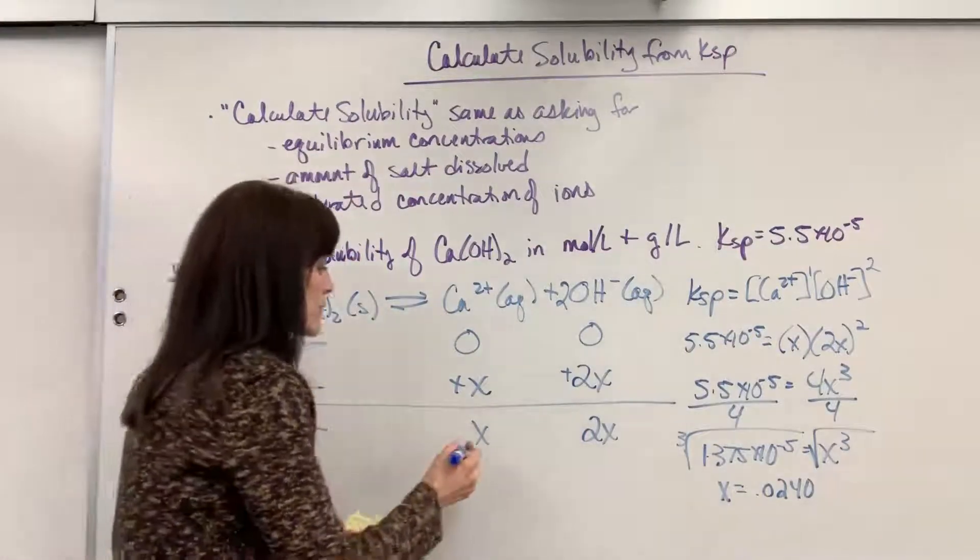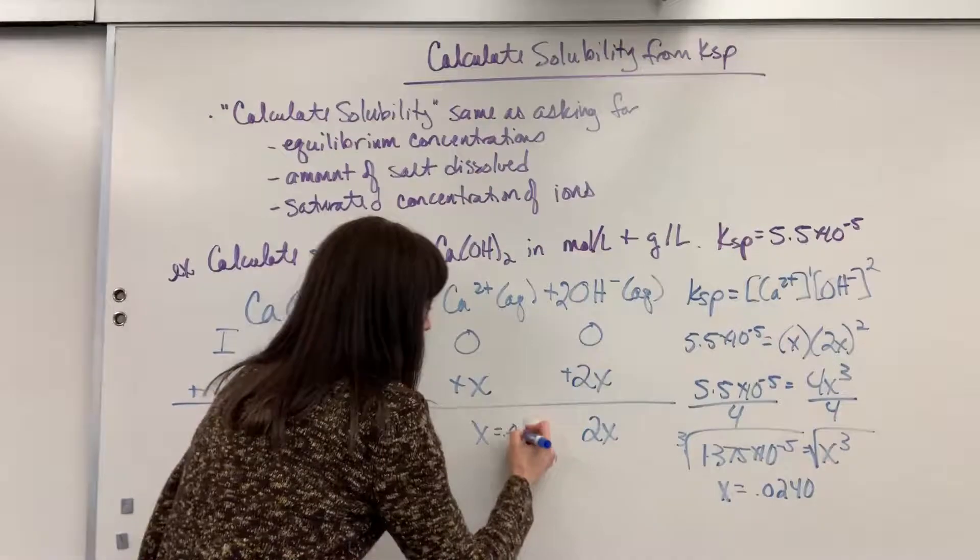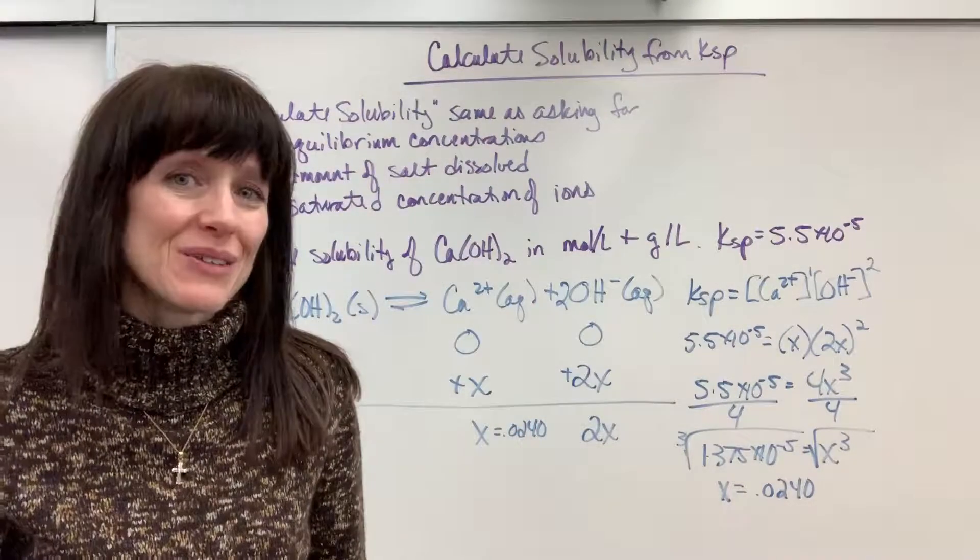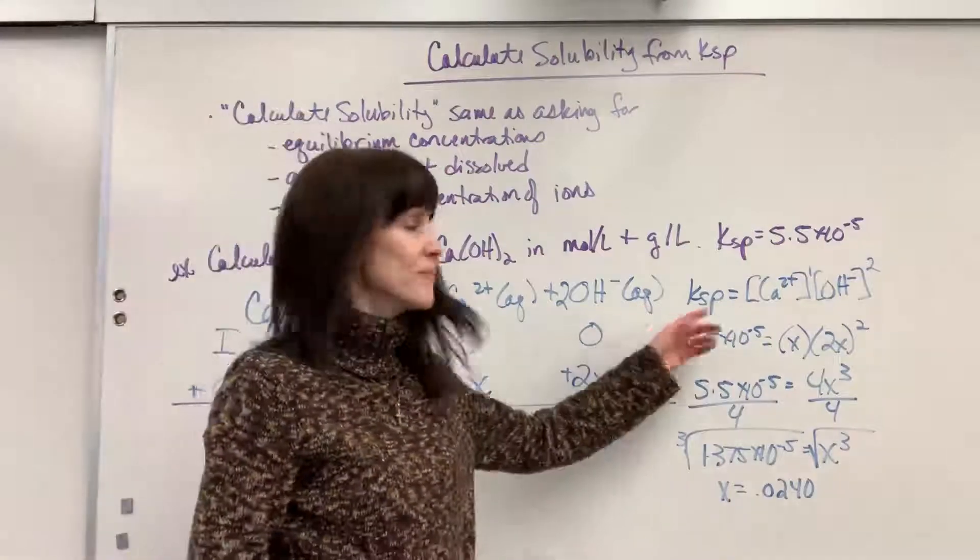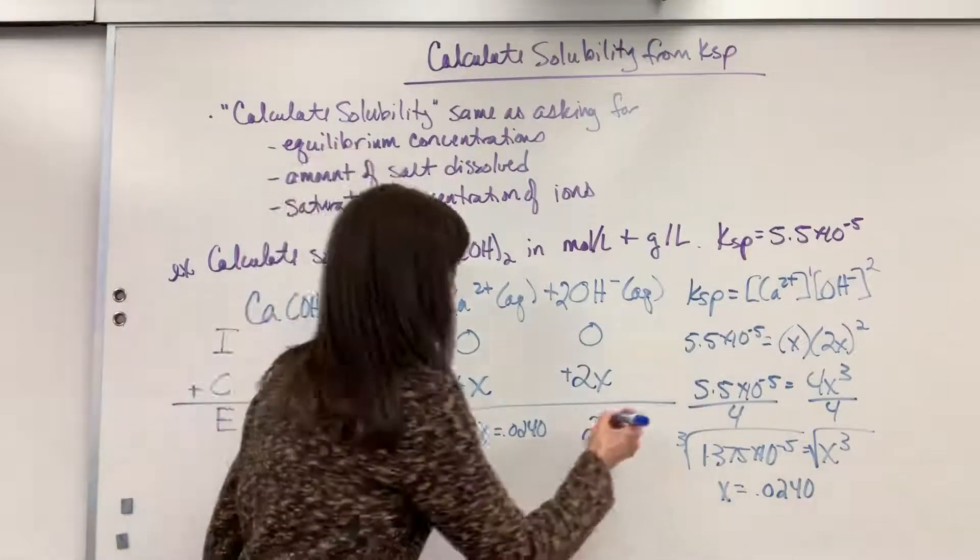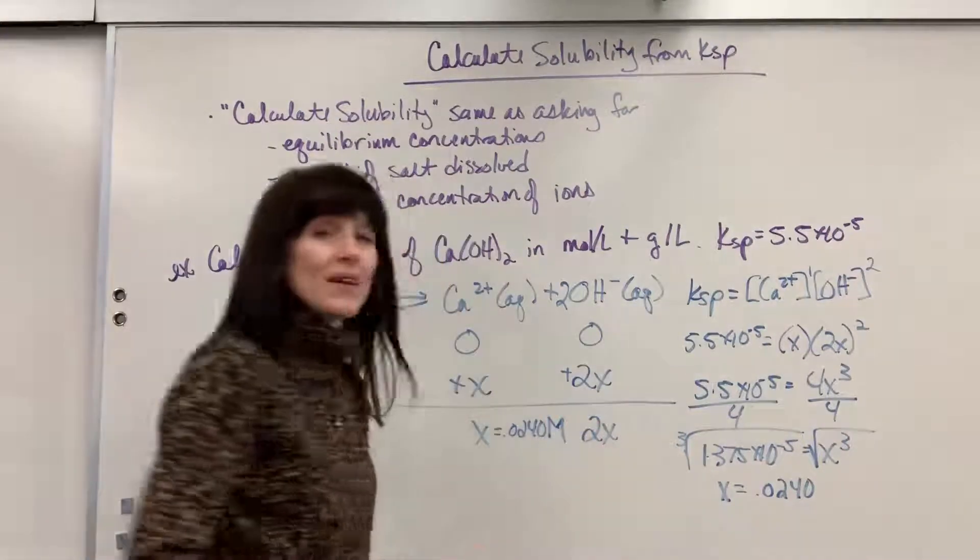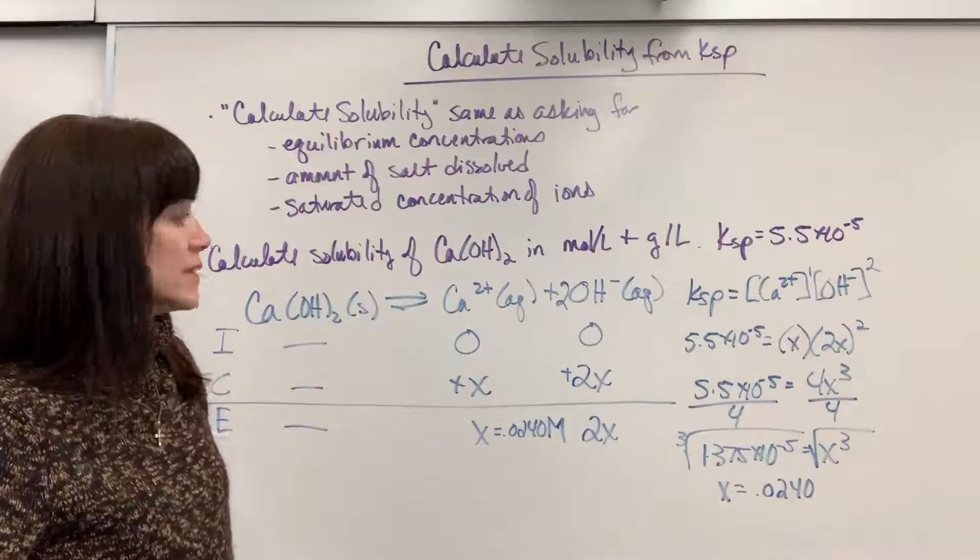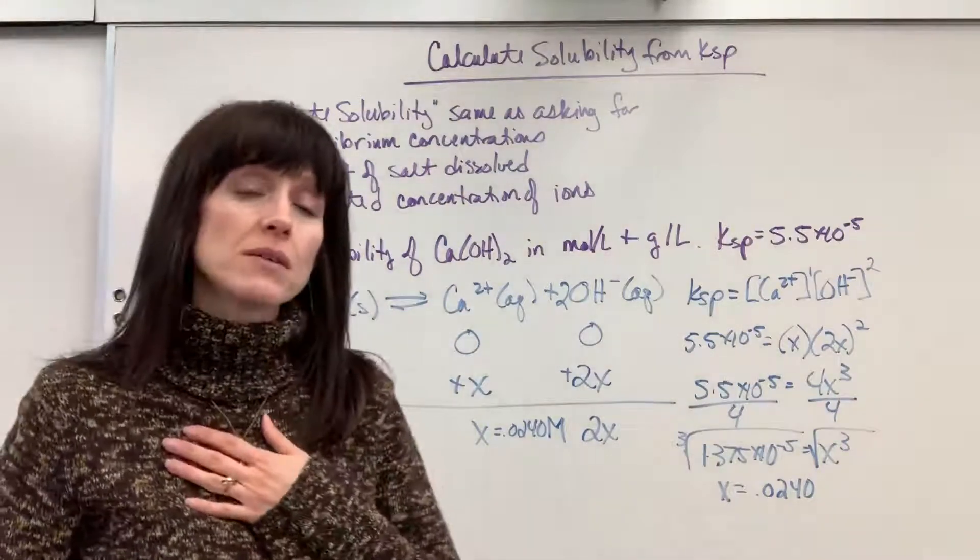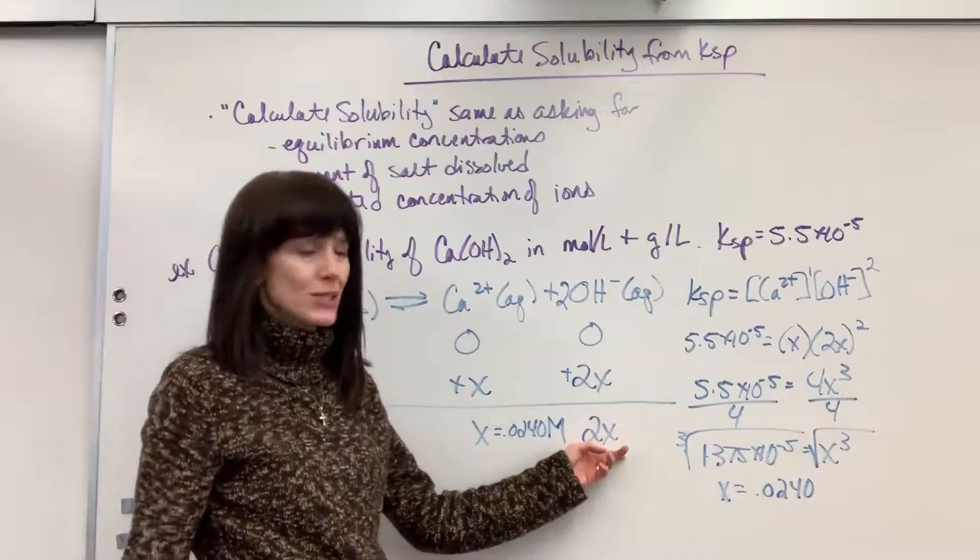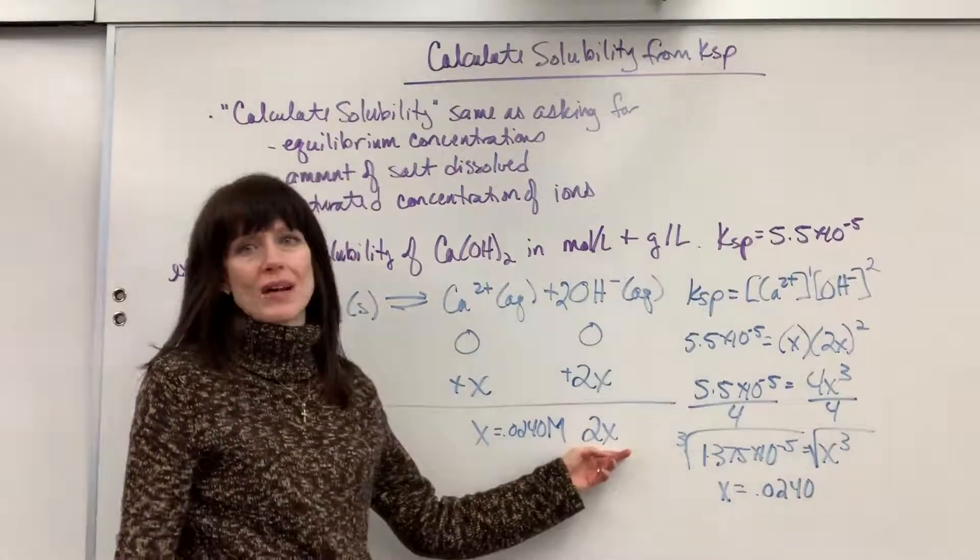So we found x. Let me come back here and write this down: x equals 0.0240. Now what's the unit on this? What are the units that we use for equilibrium? That bracket's a code. Remember, it's molarity. So we actually found the molarity. This is the molarity of the calcium ion that dissociates. Now if we wanted the molarity of the hydroxide ion, what would you do? Just multiply it by 2. It would be 0.048 molar.